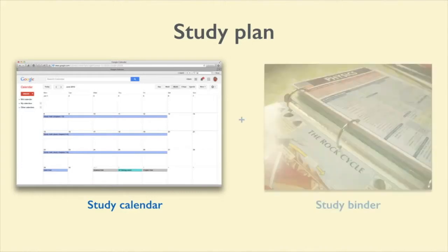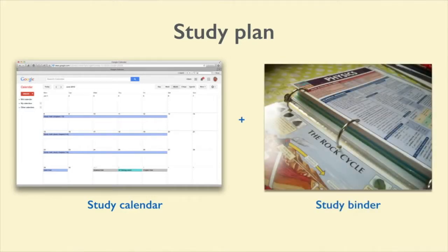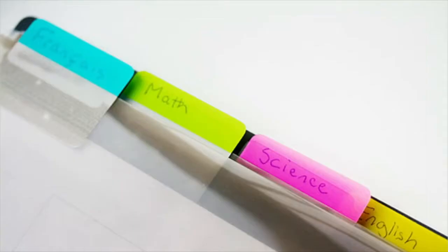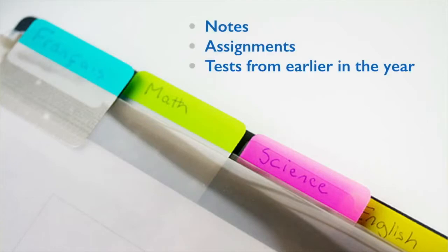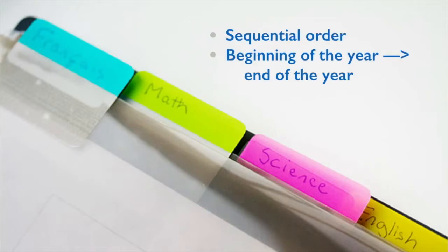The second thing you'll need to do is create a study binder, which you'll use to organize your studying materials. The binder should be divided up into sections, one for each class, and within each section you should organize all the materials you have for that class — things like notes, assignments, and tests from earlier in the year. Arrange each class in sequential order, starting with the materials from the beginning of the school year and ending with the most recent ones.